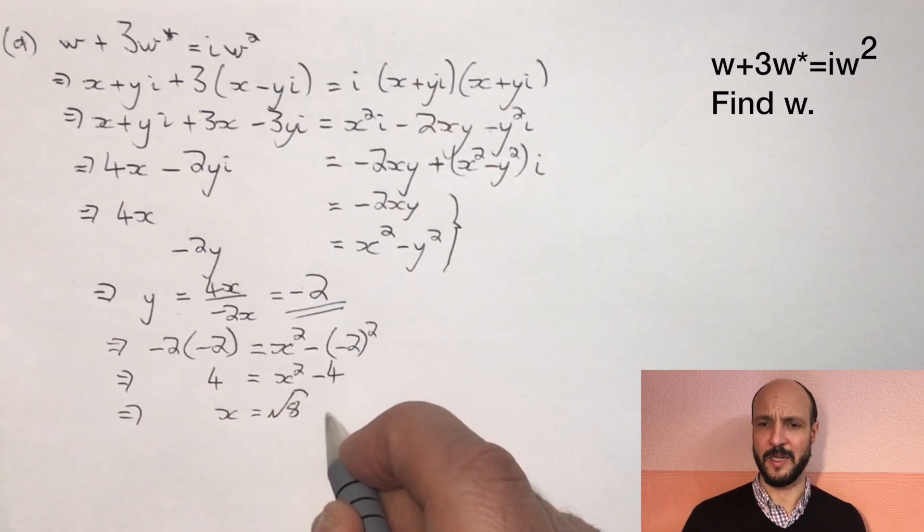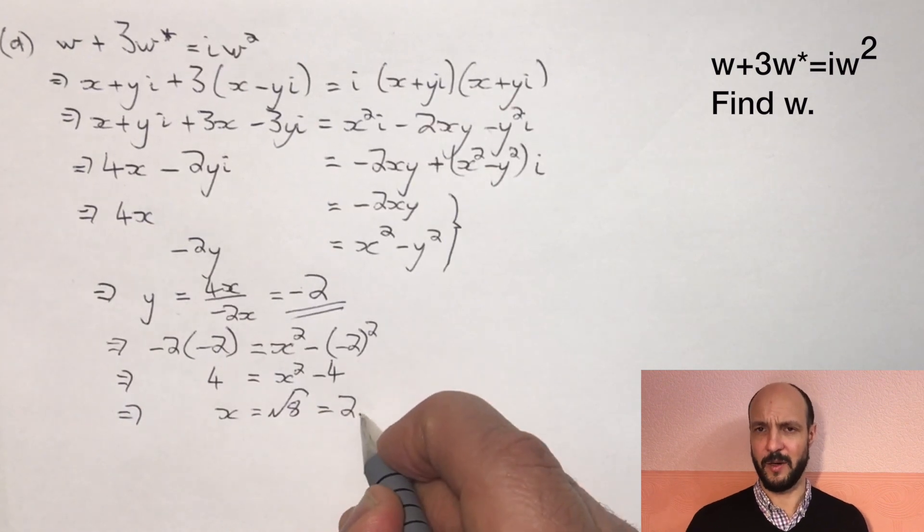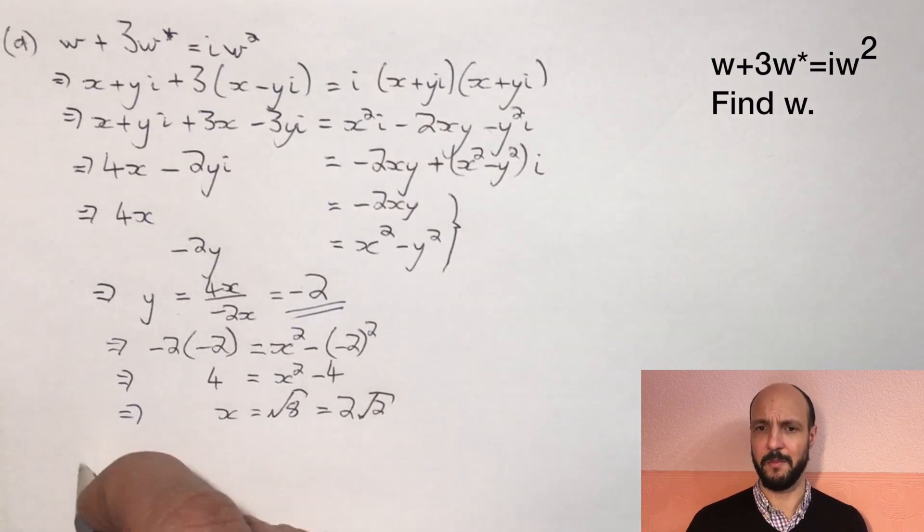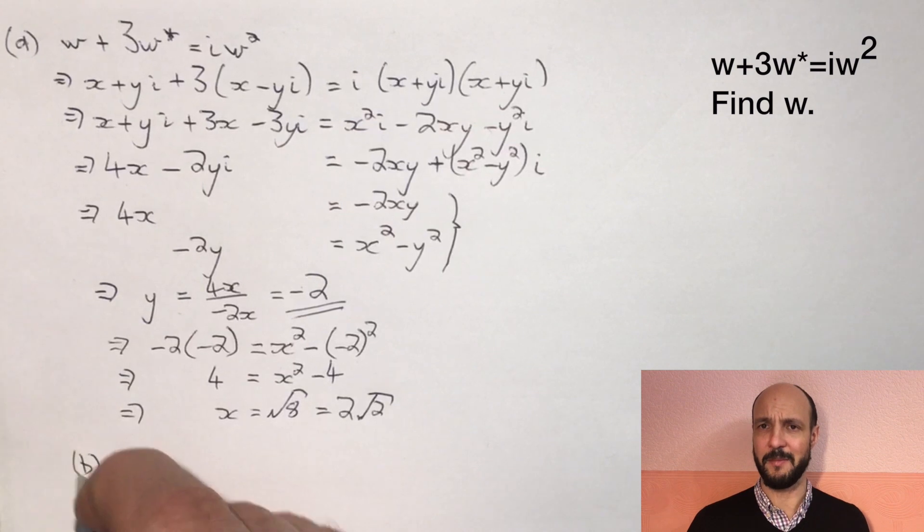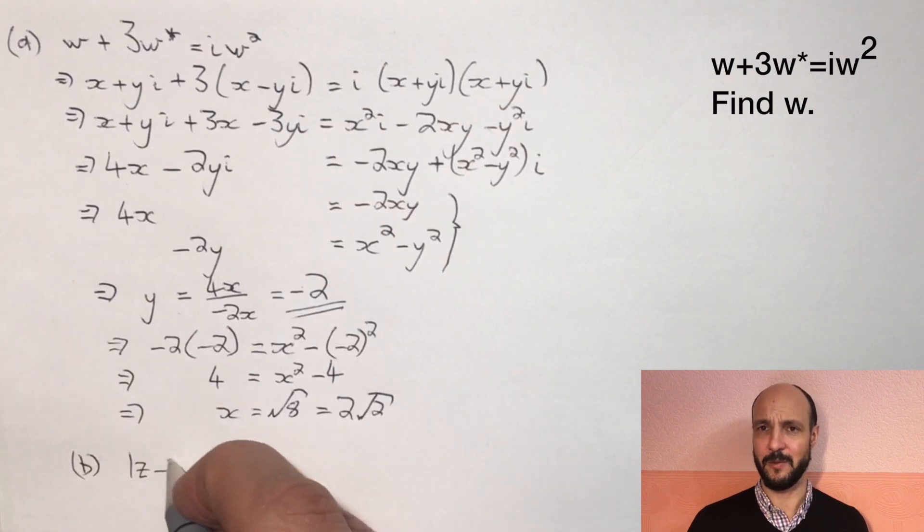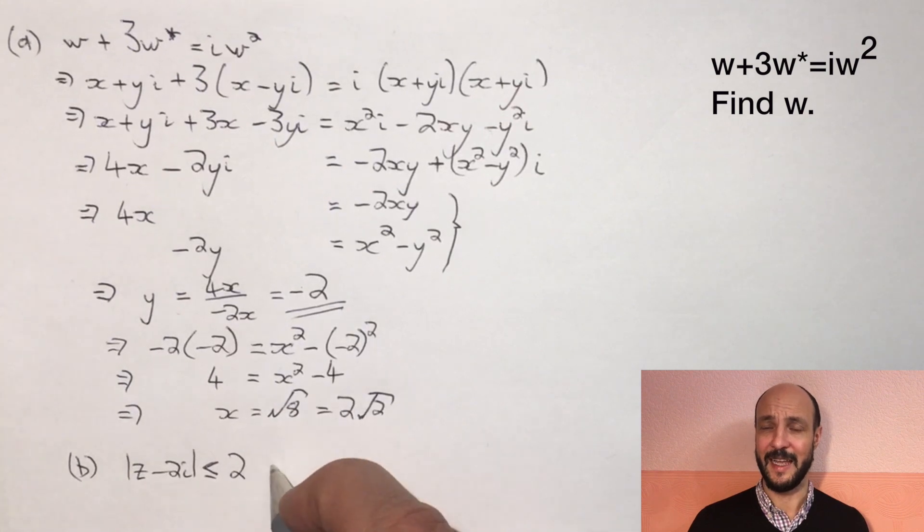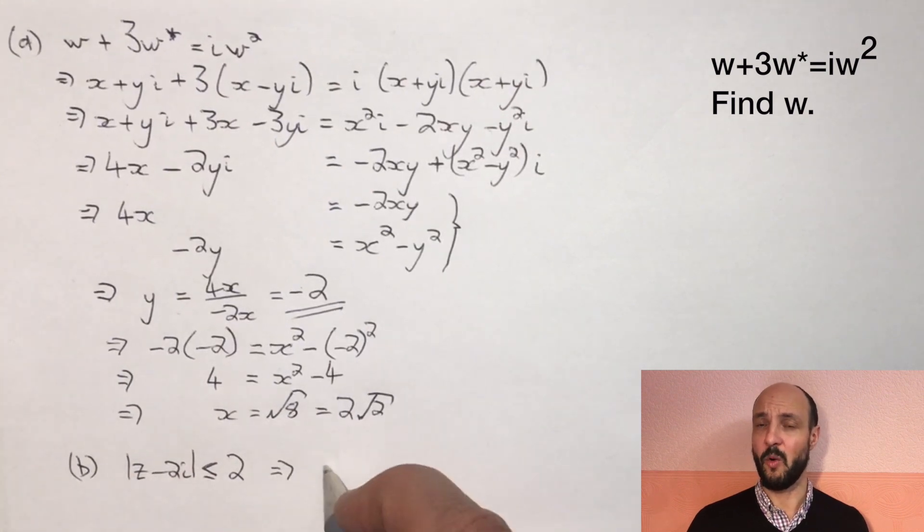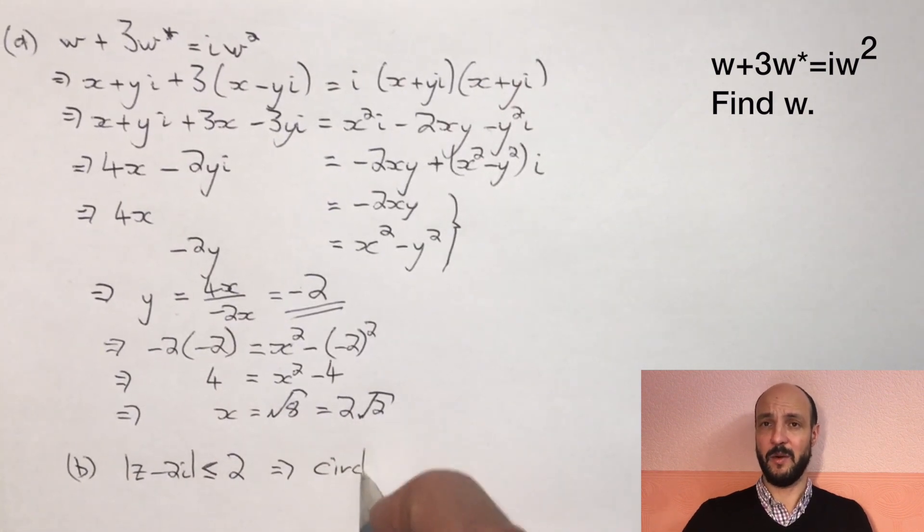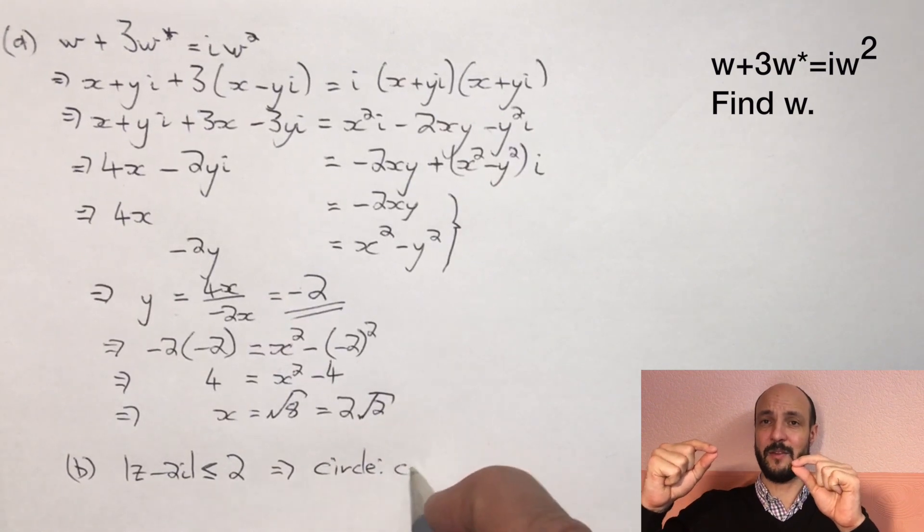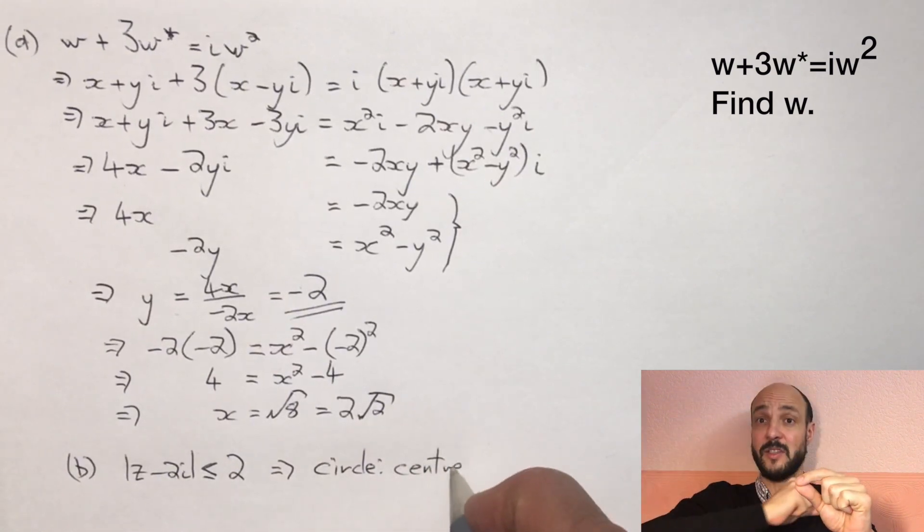So the second part of the question, let's look at what these two inequalities are first. So we've got the mod of Z minus 2i is less than or equal to 2. That's telling us the distance between the point Z and the point 2i are always less than or equal to 2. But if you have points a set distance from a given point, that actually gives us a circle when we're in a two-dimensional plane.